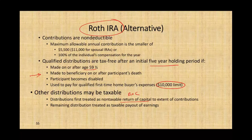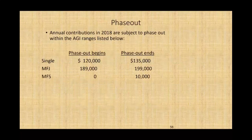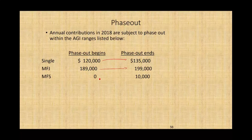Annual Roth IRA contributions are also subject to phase-out. For single filers, the phase-out range is $120,000 to $135,000. For married filing jointly, it's $189,000 to $199,000. For married filing separately, it's $0 to $10,000. Congress is generous, but only to a point.